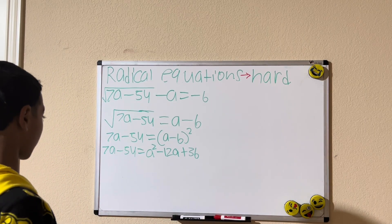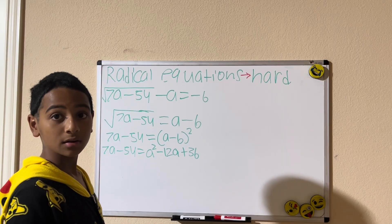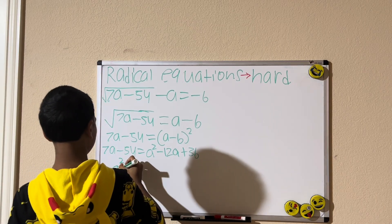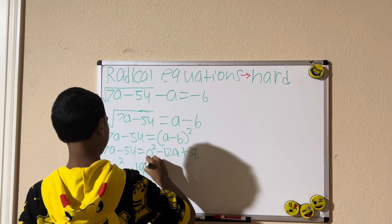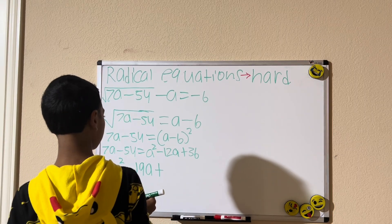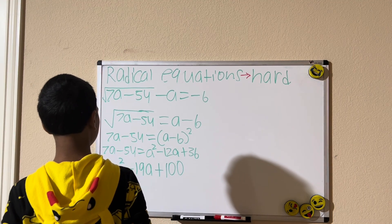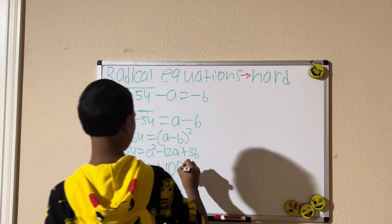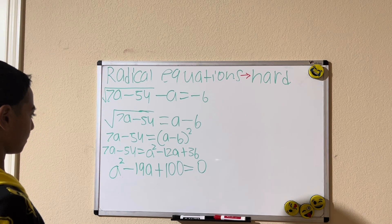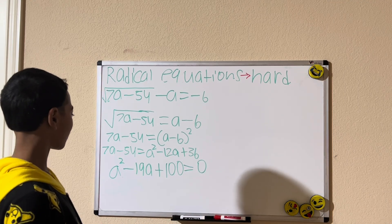Let's rearrange all our terms. We subtract 7a from both sides and add 54 to both sides, which gives us a squared minus 19a plus 90 equals zero.